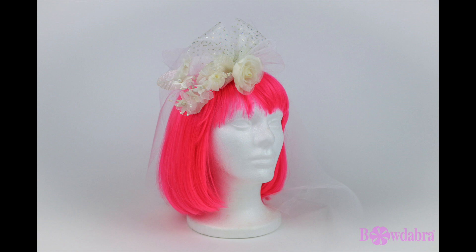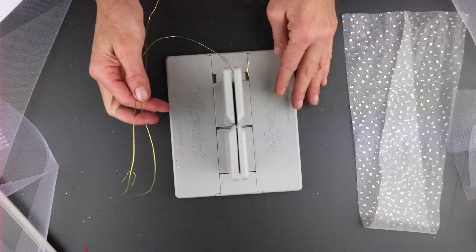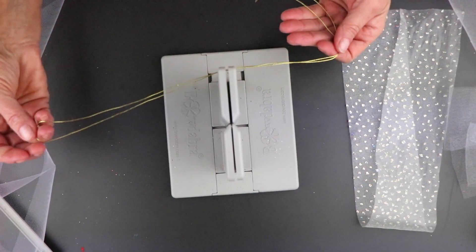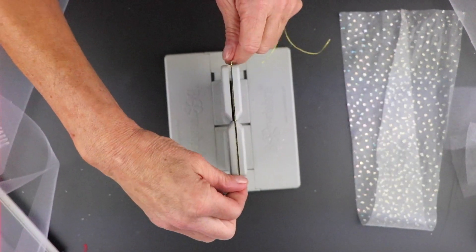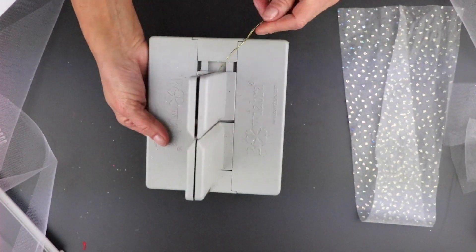Now we're going to make this really beautiful bridal headpiece. So the first thing that I'm going to do is take my Bowdabra bow wire, fold it in half, and lay it down into my Bowdabra and tuck it underneath.